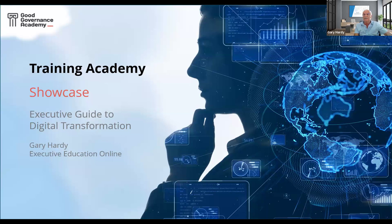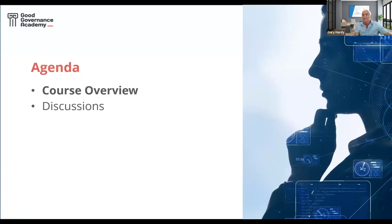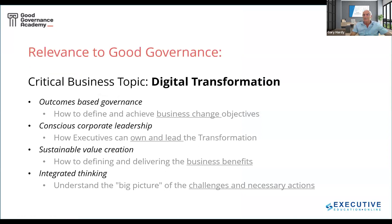That led me to reinventing the whole educational approach and using technology to help. Today we're going to do this in two parts: I'll go through a quick overview of this course — the Executive Guide to Digital Transformation — connect it to the Good Governance Academy's training criteria, show a little bit of the content, and then for the rest of the session we'll have interaction. I hope you'll ask Frank and me some difficult questions and get some discussion going.